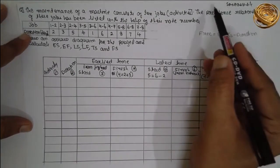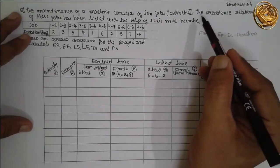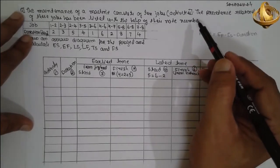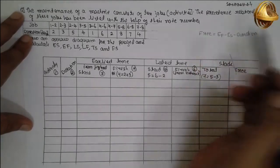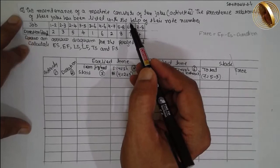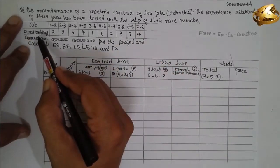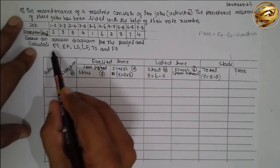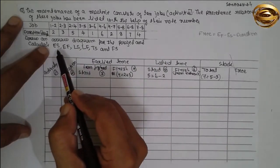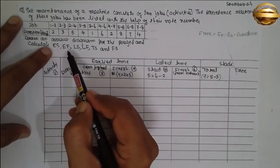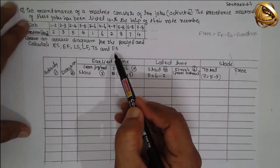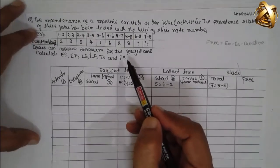I am Suddhush Ghazankar. Today I am teaching you Operation Research — specifically, the Critical Path Method. This is the problem given. Job and duration are given. We have to find out earliest start, earliest finish, latest start, latest finish, total slack, and free slack.